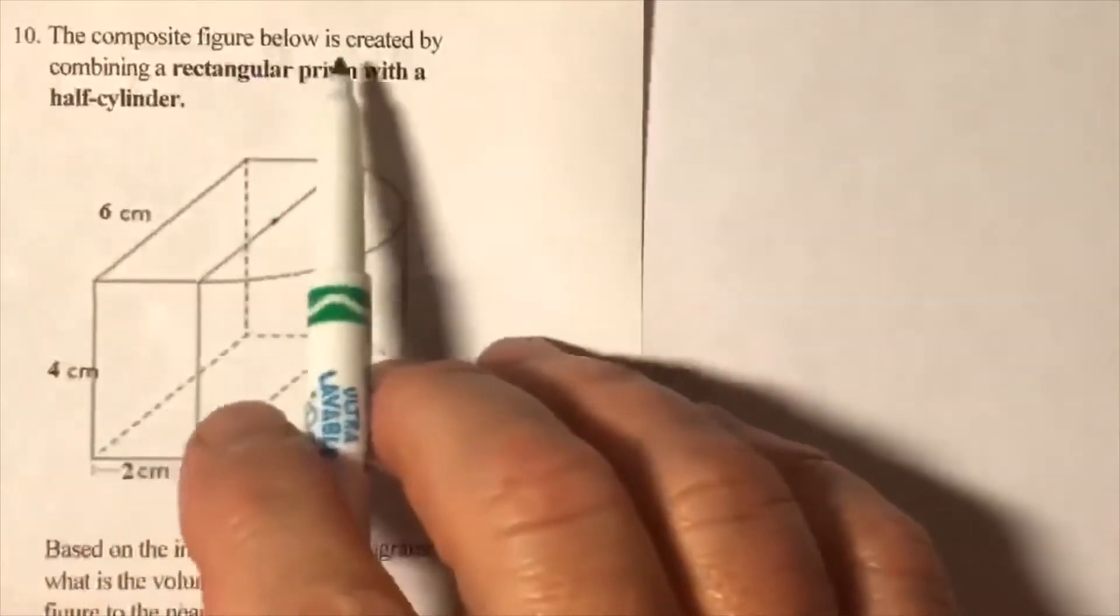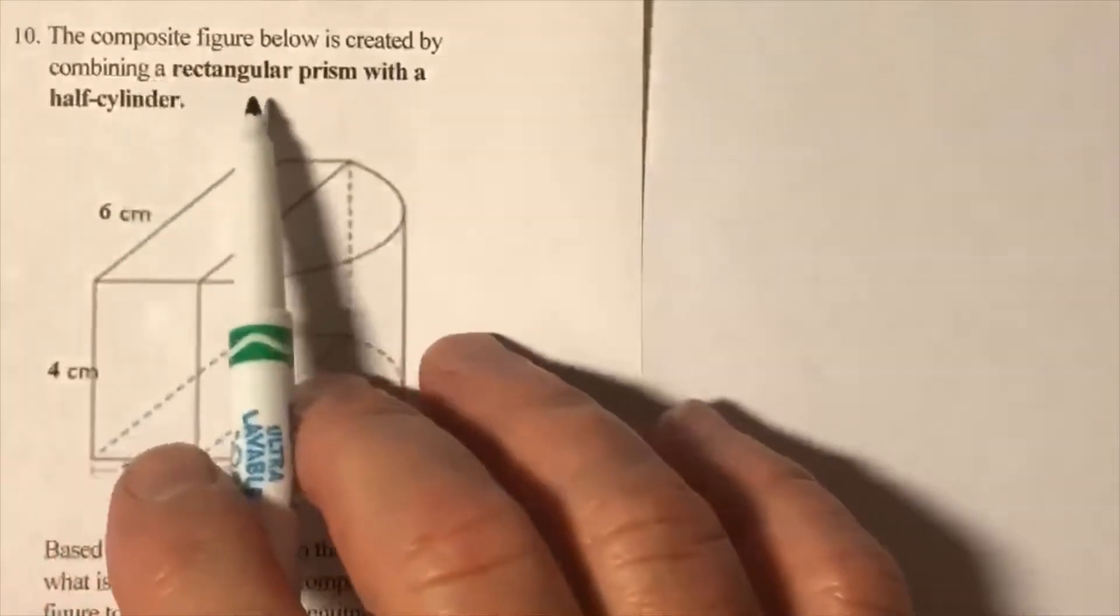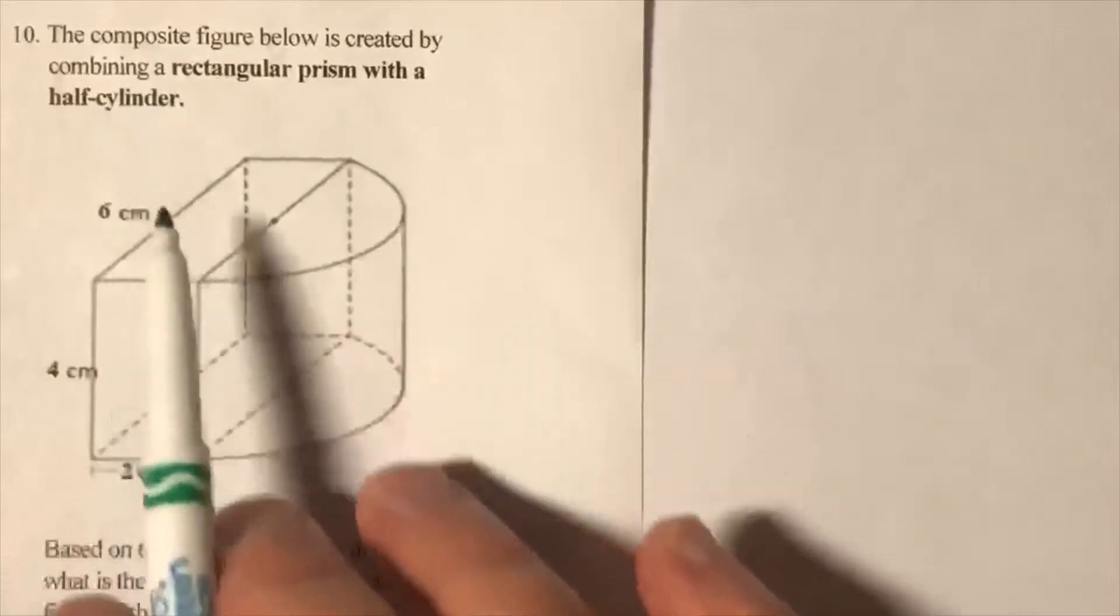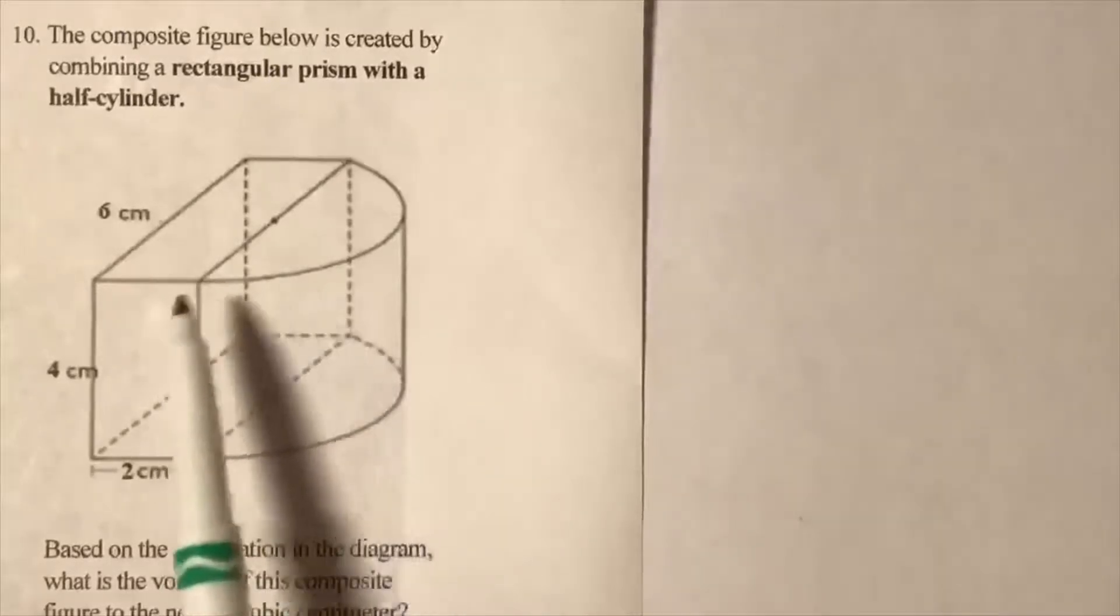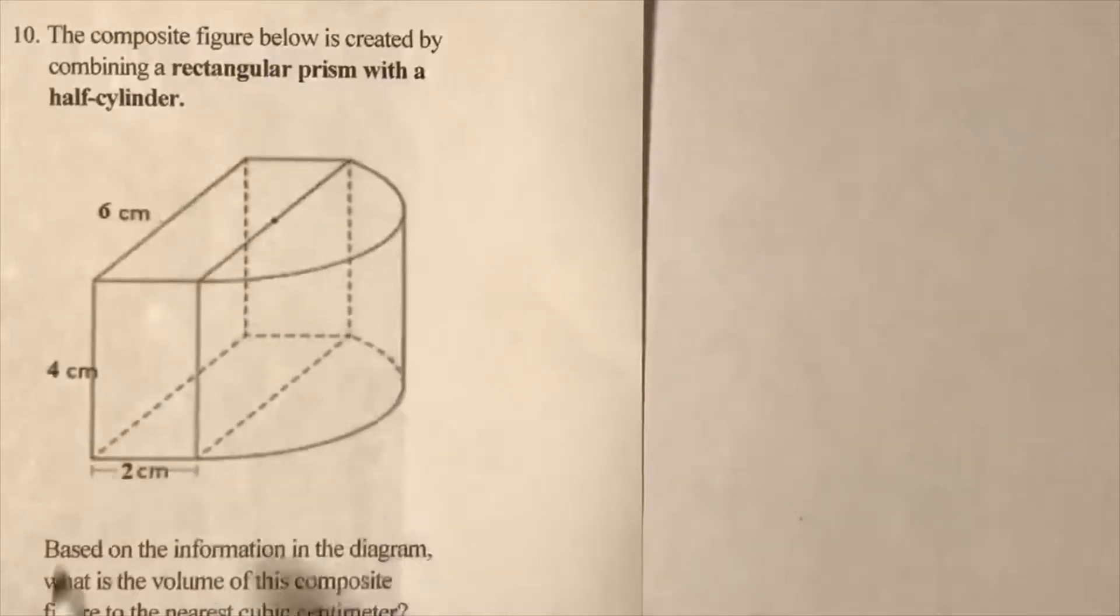The composite figure below is created by combining a rectangular prism and a half cylinder. Okay, so it's already described to you what the two shapes are that make up this composite.